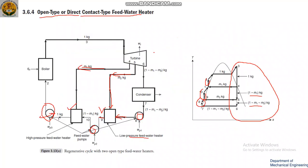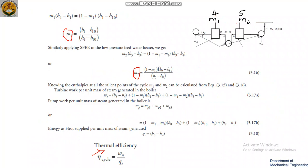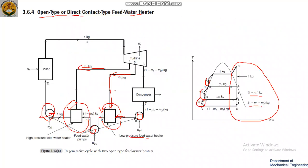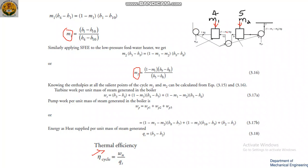M1 and M2 correspond to the high pressure and low pressure feed water heaters respectively. Applying the steady flow energy equation: M1 amount of fluid enters, so M1 is equal to M1 into (H4 minus H1), because H4 is greater than H1. This equals (1 minus M1) into (H1 minus H10), because H1 is greater than H10.